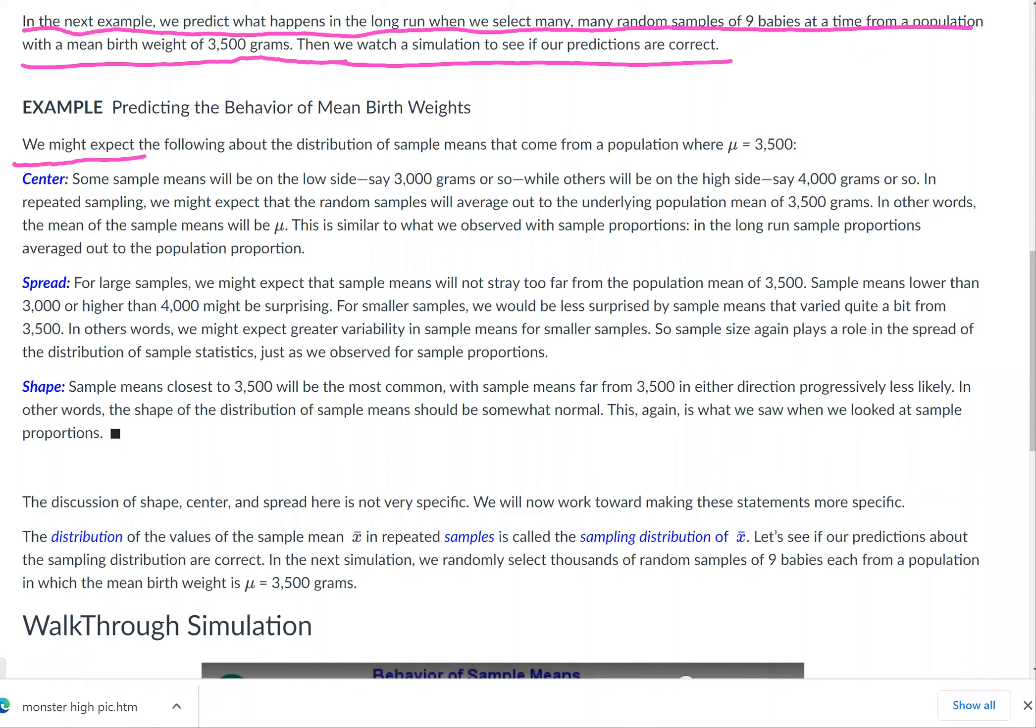For example, we might expect the following about the distribution of sample means that come from a population where μ is 3,500. The center: some sample means will be on the low side, say 3,500 grams or so, while others will be on the high side, say 4,000 grams or so.